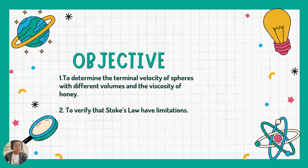The objective of this experiment is to determine the terminal velocity of spheres with different volumes and also the viscosity of honey. The other objective is the verification of Stokes' law's limitations. We know that Stokes' law has some limitations. For example, the object has to be a sphere falling through a fluid, it has to be a small object, and the flow of the fluid has to be laminar, not turbulent. But in this experiment, we're just going to look at the size of the object affecting Stokes' law.